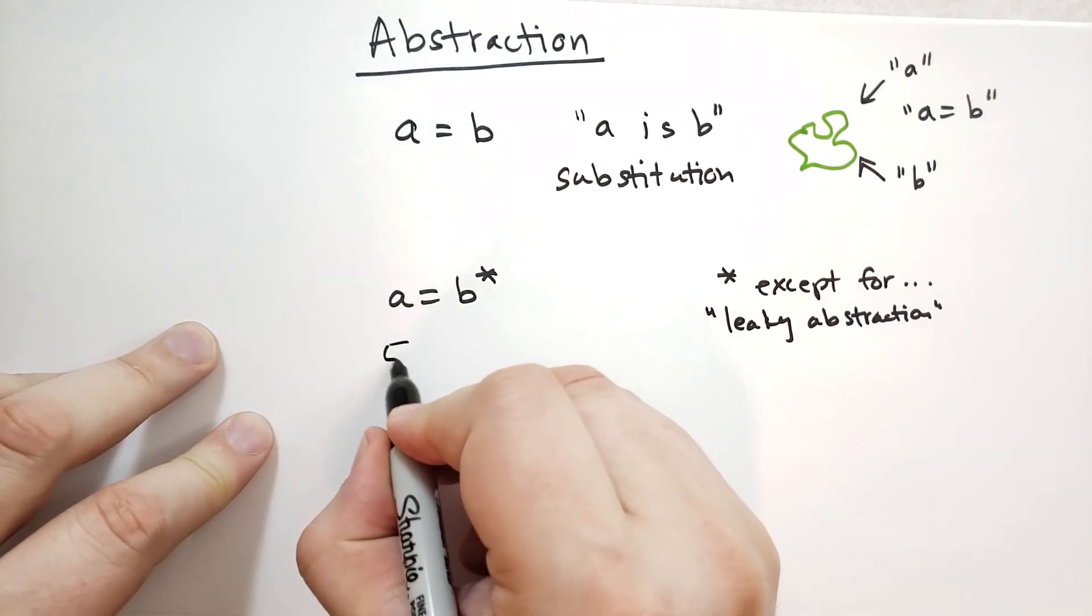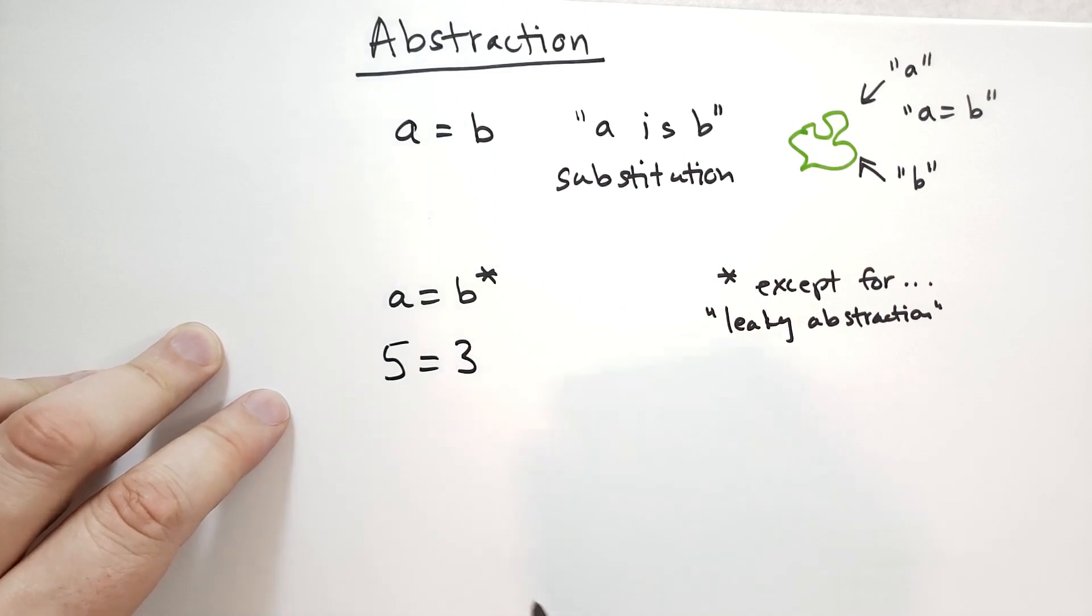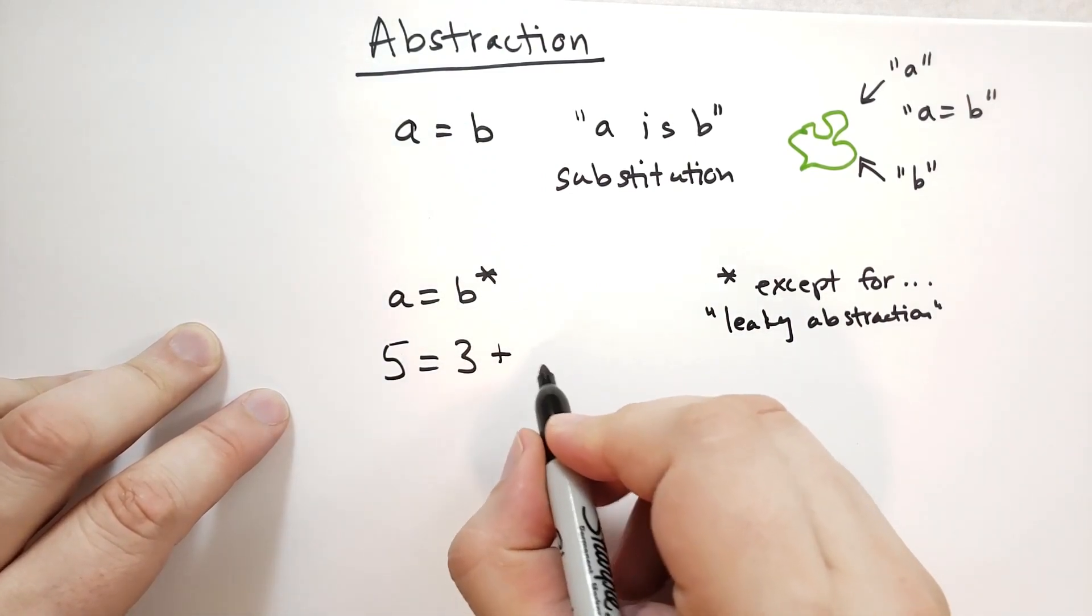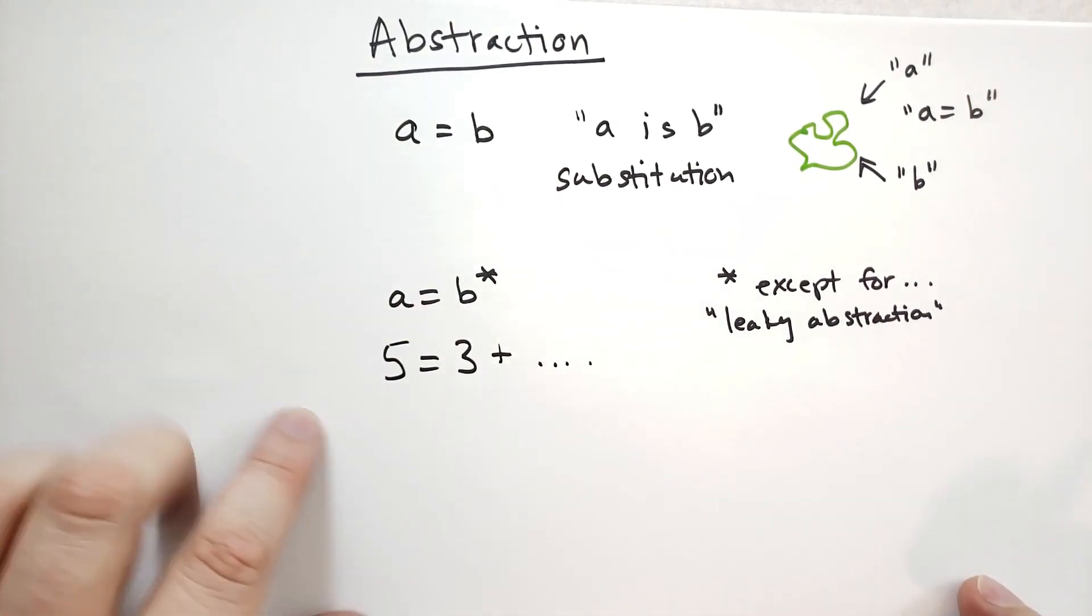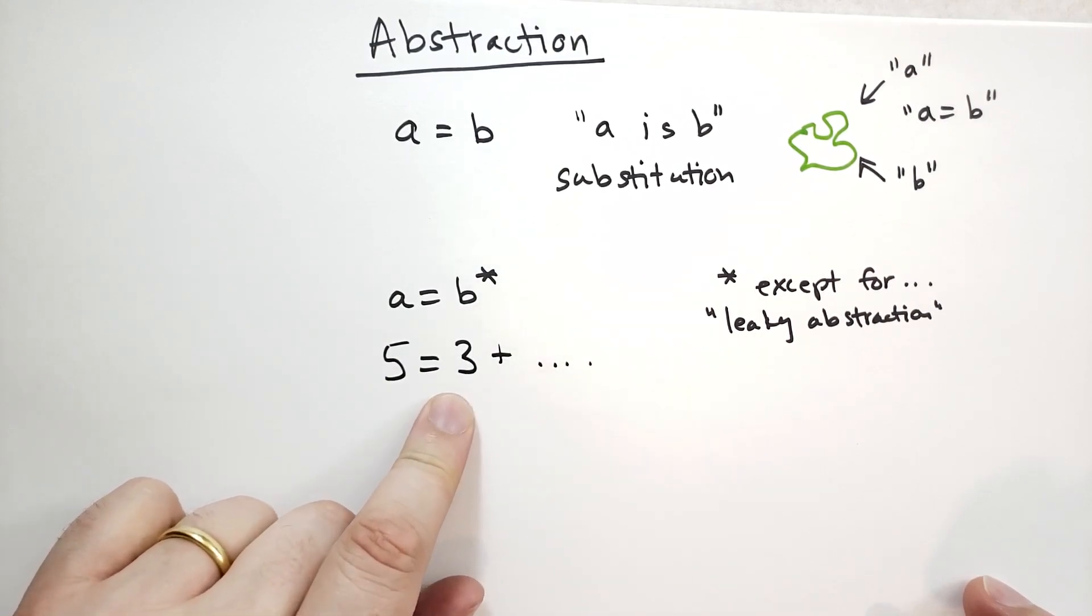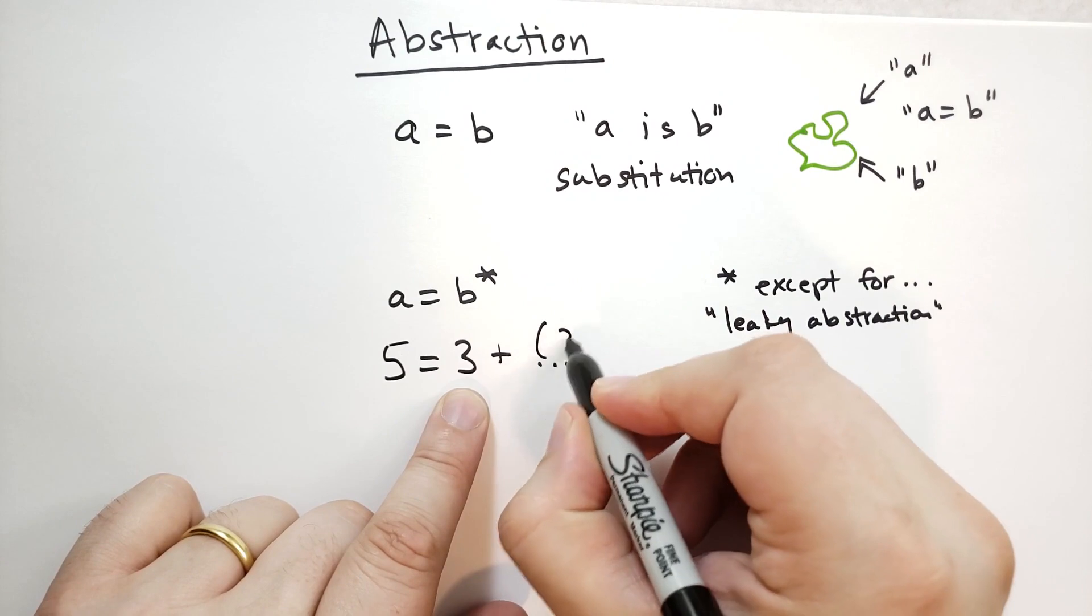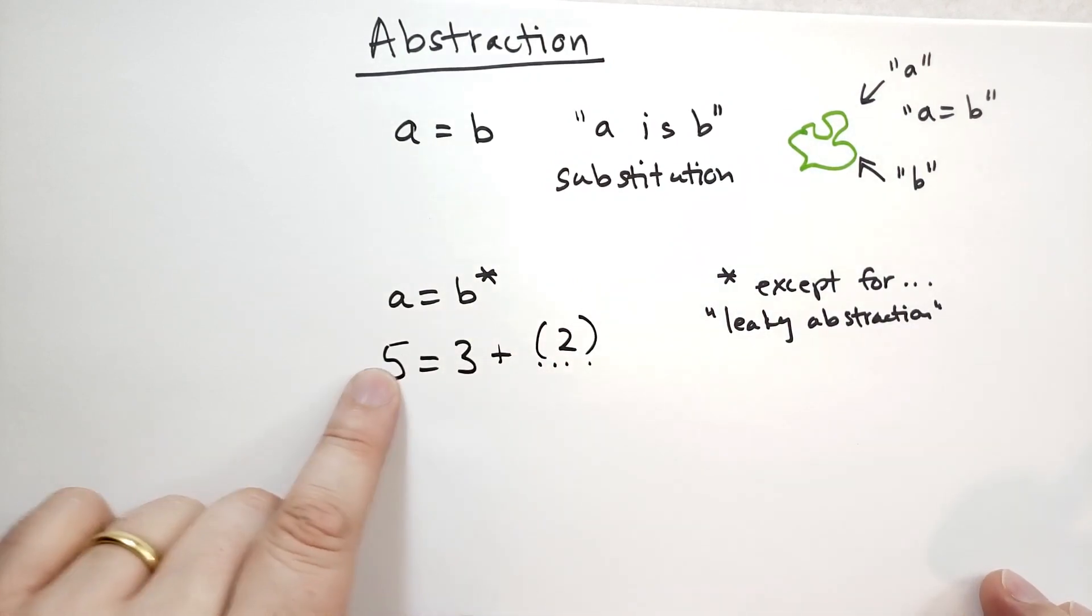Let me give you an example. So 5 is equal to 3. Well, not quite. We actually have to add some other numbers to it. But 5 and 3 otherwise are pretty dang similar. And in this context, you'll notice that 5 is an integer, 3 is an integer. They're numbers. They have very similar behavior. The only difference really is that 5 is 2 more than 3. And so we know that that difference is 2.